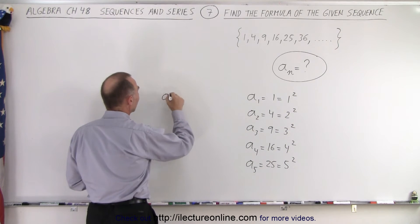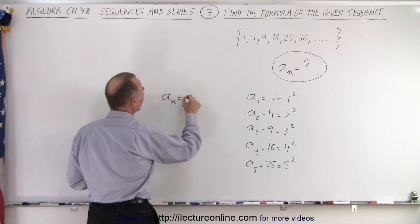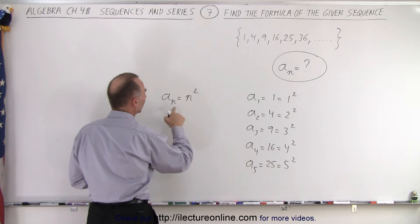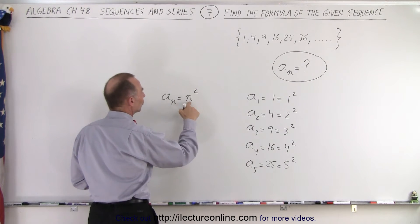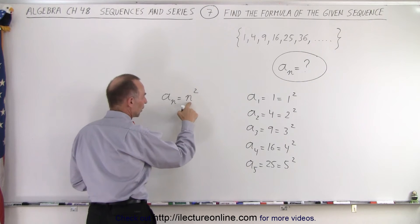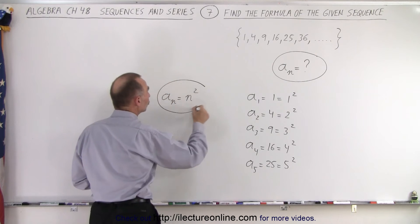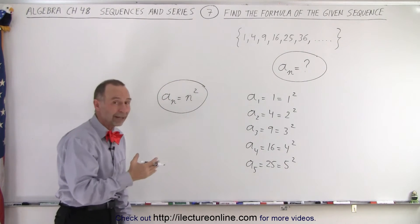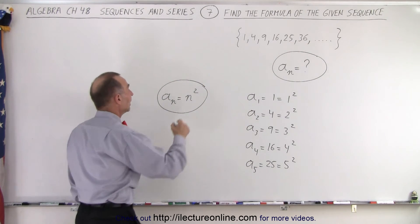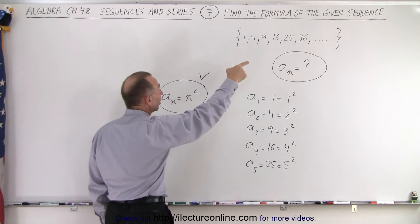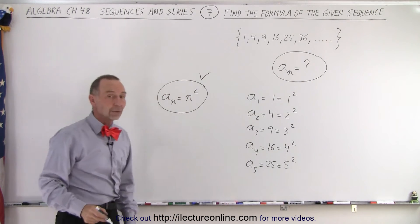So essentially, I can say that a sub n is therefore equal to n squared because if n is equal to 1, I have 1 squared. If n is equal to 2, I have 2 squared. If n is equal to 3, I have 3 squared. So this is the relationship. This is the way in which we can express a sub n. And that means that this is the formula of that particular sequence.